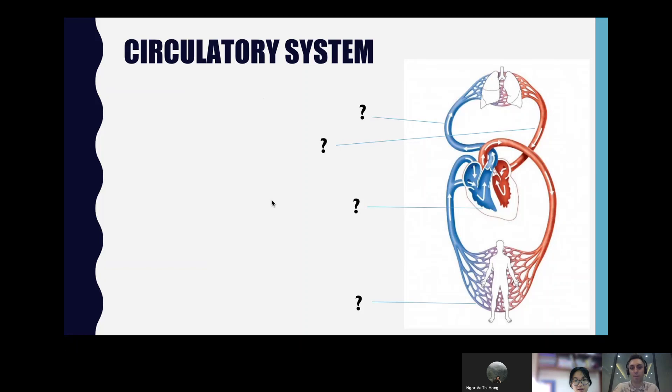What is this system and what is the main job? This is the circulatory system and the main job is carry oxygen and food to all the cells in your body. Good. Well done. What are the main parts? The main parts of this system is the heart, the arteries, the veins, the capillaries and the blood. Yeah. Fantastic. Well done. So those are the different parts.